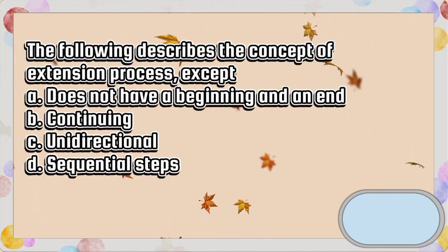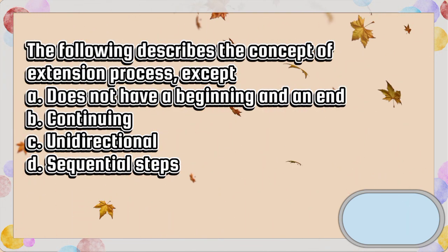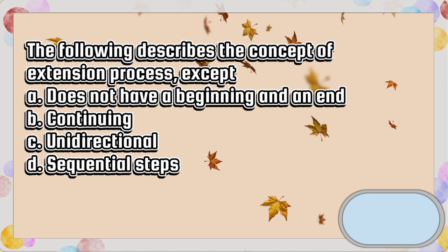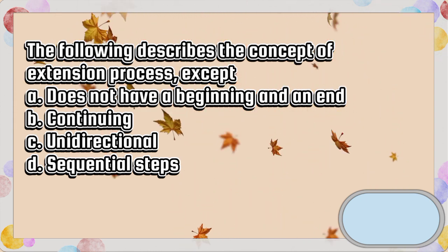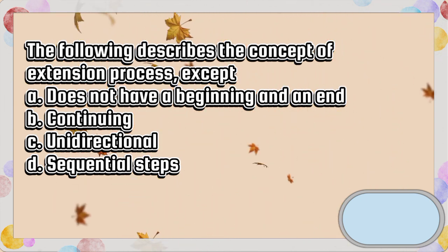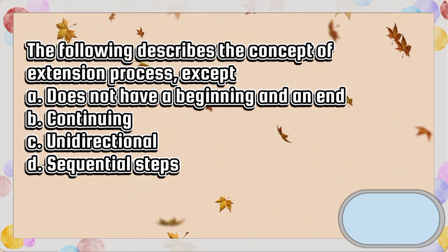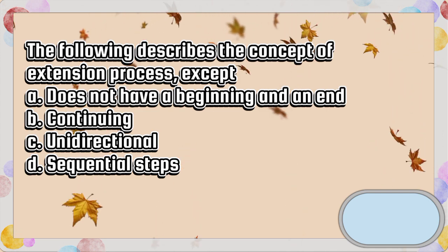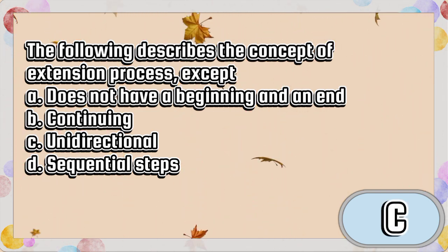The following describes the concept of extension process, except. A. Does not have a beginning and an end. B. Continuing. C. Unidirectional. D. Sequential steps. The answer is letter C.